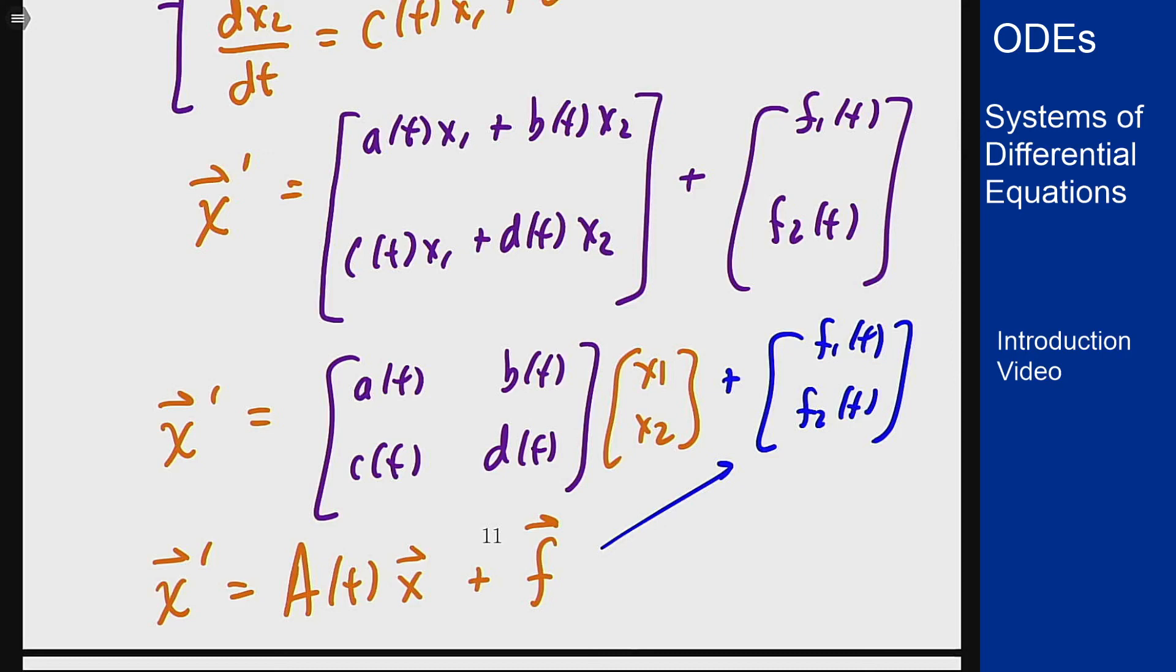So that's the idea of systems of differential equations and how they can be written both in just equation form one by one, as well as in vector form, or in the case of linear equations, in a matrix form as well where there's this matrix involved, this A of t, that pops out multiplying the original solution vector for these equations.